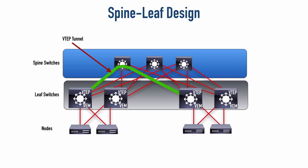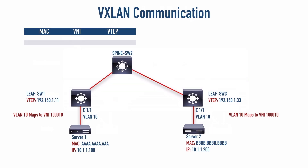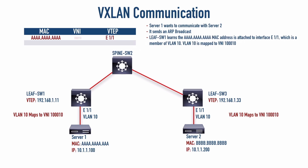Let's walk through an example. The table on screen is being maintained by leaf switch one. We want server one to communicate with server two. Server one sends out an ARP broadcast because it wants to reach 10.1.1.200 but doesn't know the MAC address. When that frame enters leaf switch one, it makes an entry noting that the all-A's MAC address lives off port Ethernet 1/1. The switch also has a mapping that shows VLAN 10 — which server one belongs to — maps to VNI 100010.